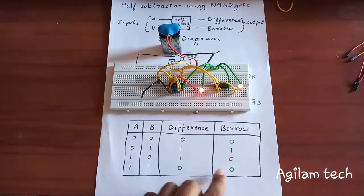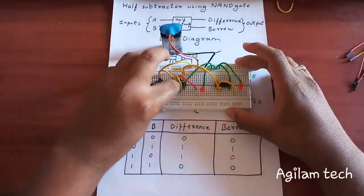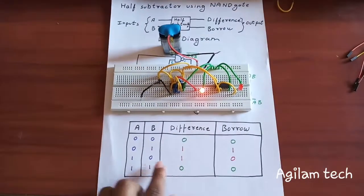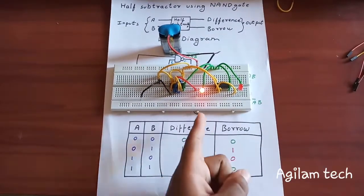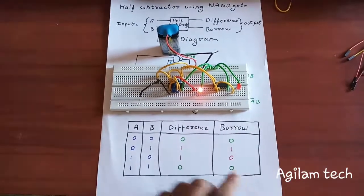For inputs one-zero, the difference is one and borrow is zero. And finally, for inputs one-one, the difference is zero and borrow is also zero.